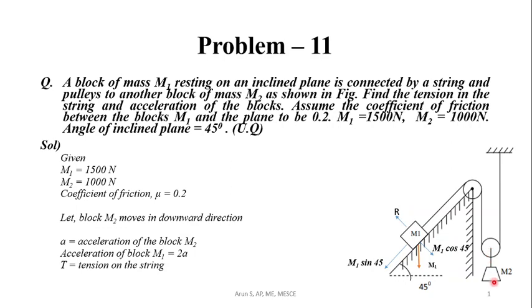Since M2 is moving in the downward direction, M1 is moving in the upper direction. The friction force on this plane will be down the plane, F.